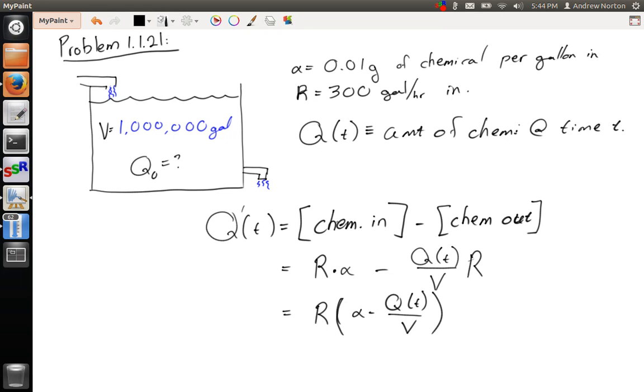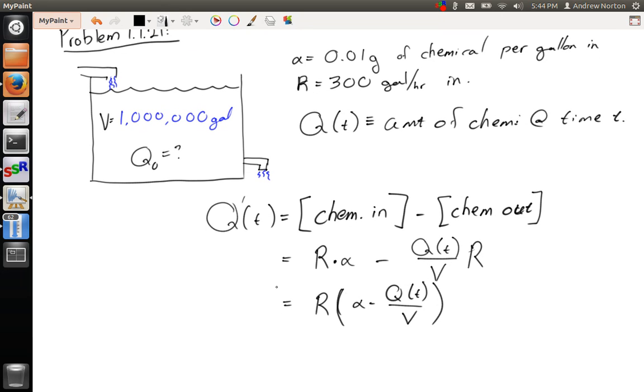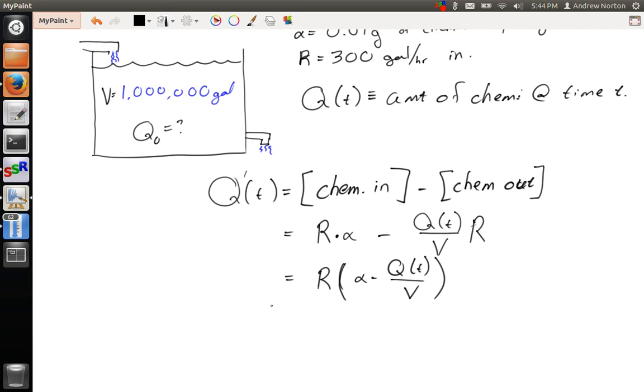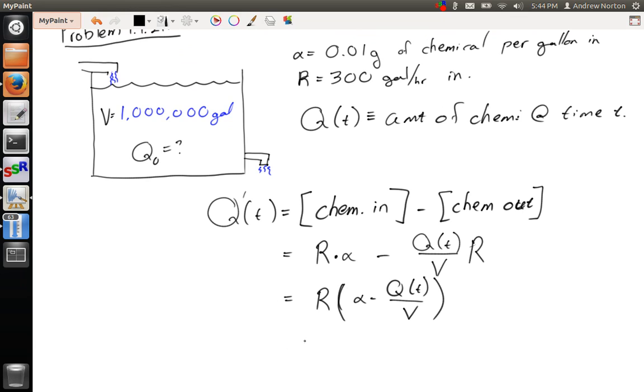And this is our differential equation. We can rewrite this to use numbers instead of our symbols that we've picked. So I'm going to say q prime of t is equal to 300 gallons per hour times 0.01 grams per gallon.